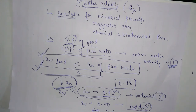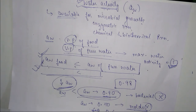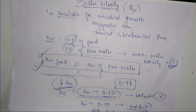Water activity is the most important factor in deciding the shelf life of food. Other factors include oxygen availability, temperature, pH, moisture content, and relative humidity, but water activity is foremost. Whenever we decide on any preservative technique, our main focus is on water activity. This is a very important topic, and many questions are asked from it in examinations.